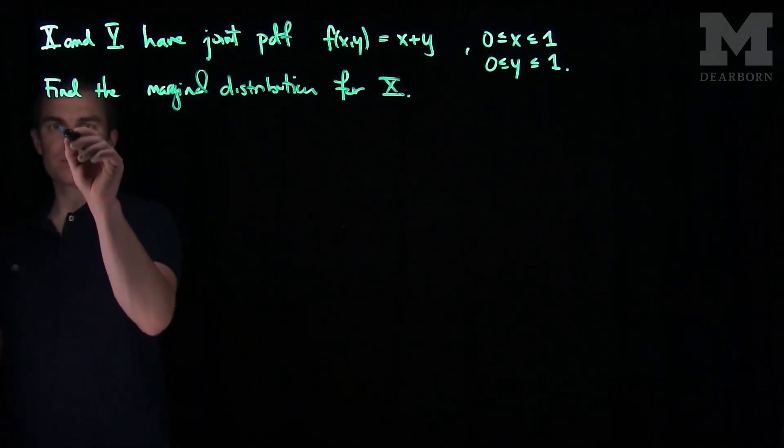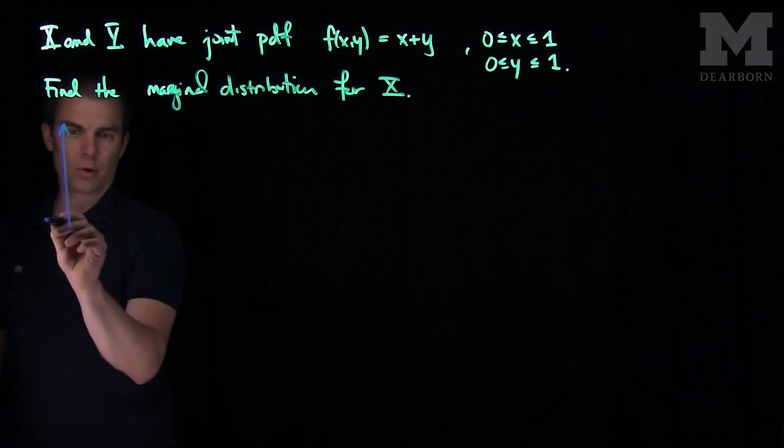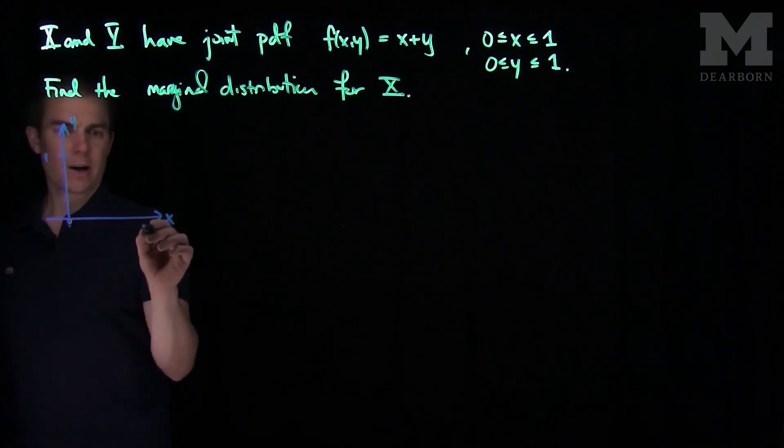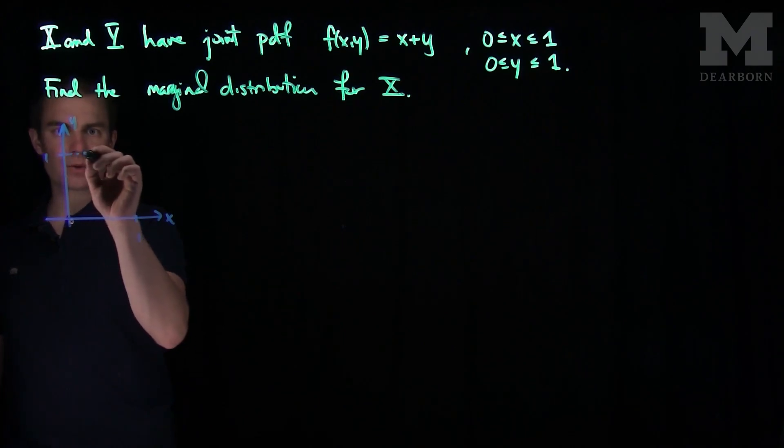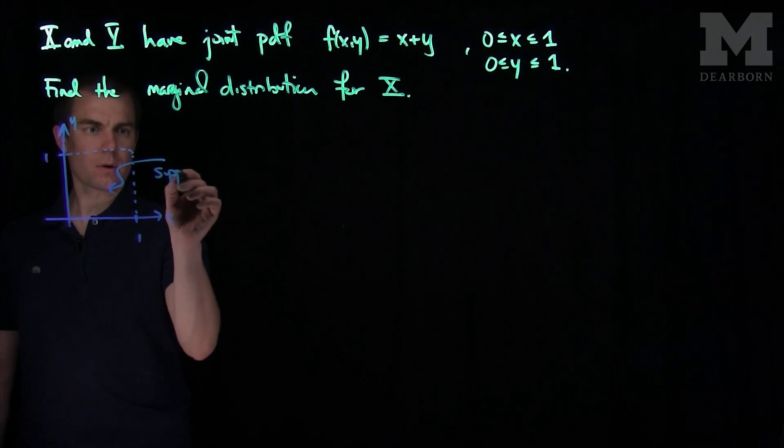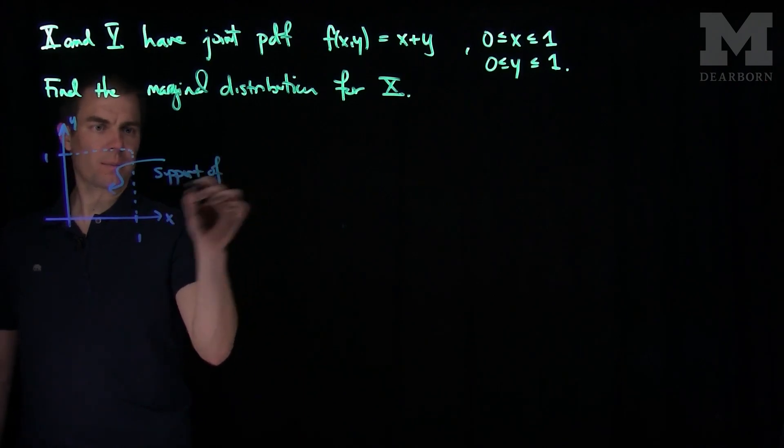With these problems we always plot the support. Here is the x-axis, here is the y-axis. And y goes between 0 and 1, x goes between 0 and 1, so we are on the square. That is the support of the pdf.